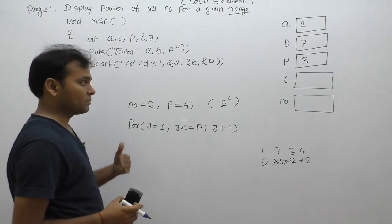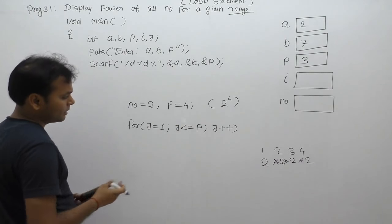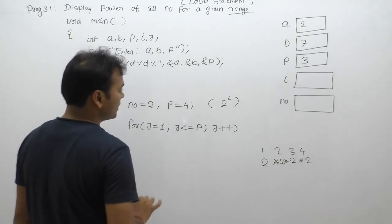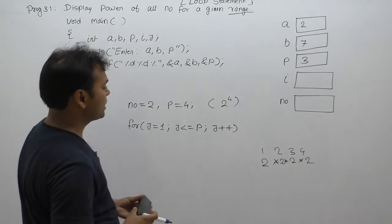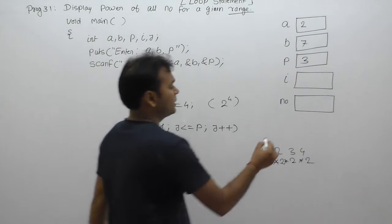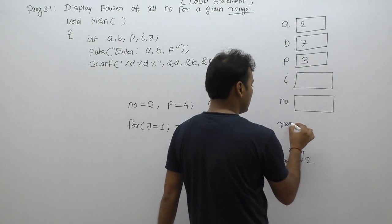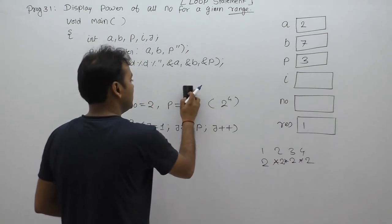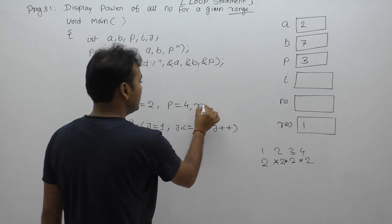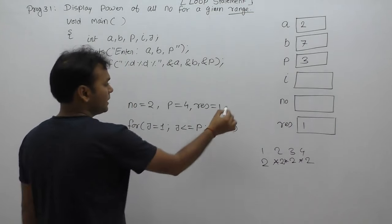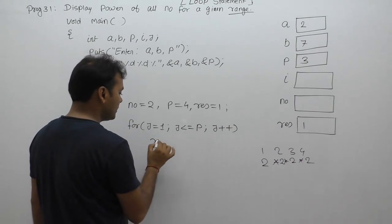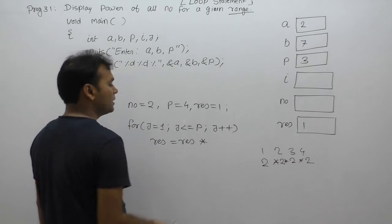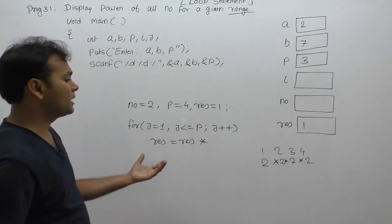The power calculation logic starts with an initial value of result equal to 1. Then every iteration, result equals result multiplied by the number — repeating this multiplication to compute number to the power P.